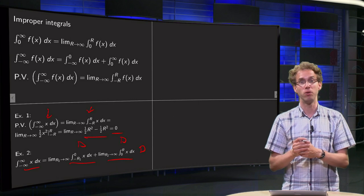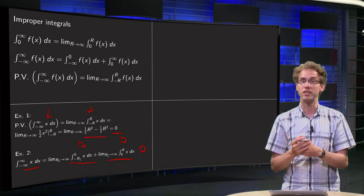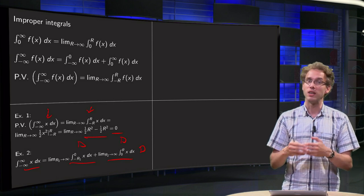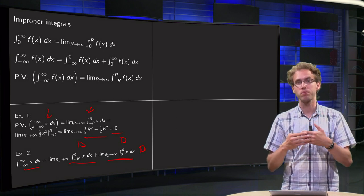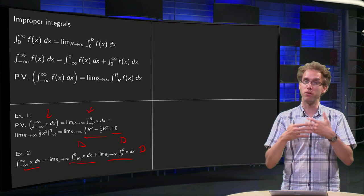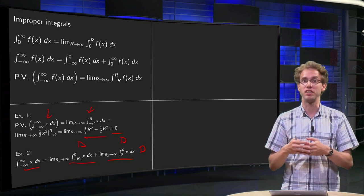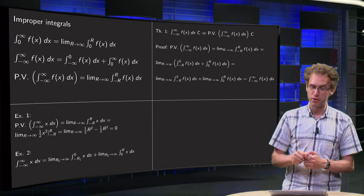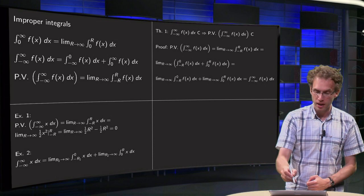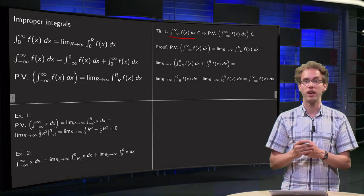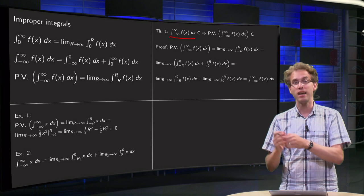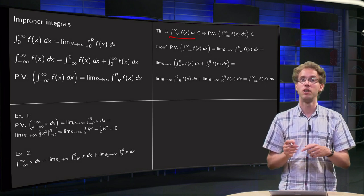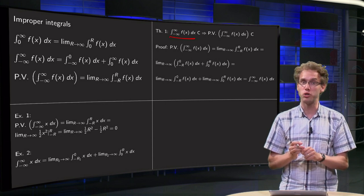So the principal value of the integral converges, whereas the improper integral itself does not converge. In that sense, the principal value converges more readily — it is weaker. And that leads to the first theorem: if the improper integral converges, then the principal value also converges, but not vice versa, as we saw from the example.